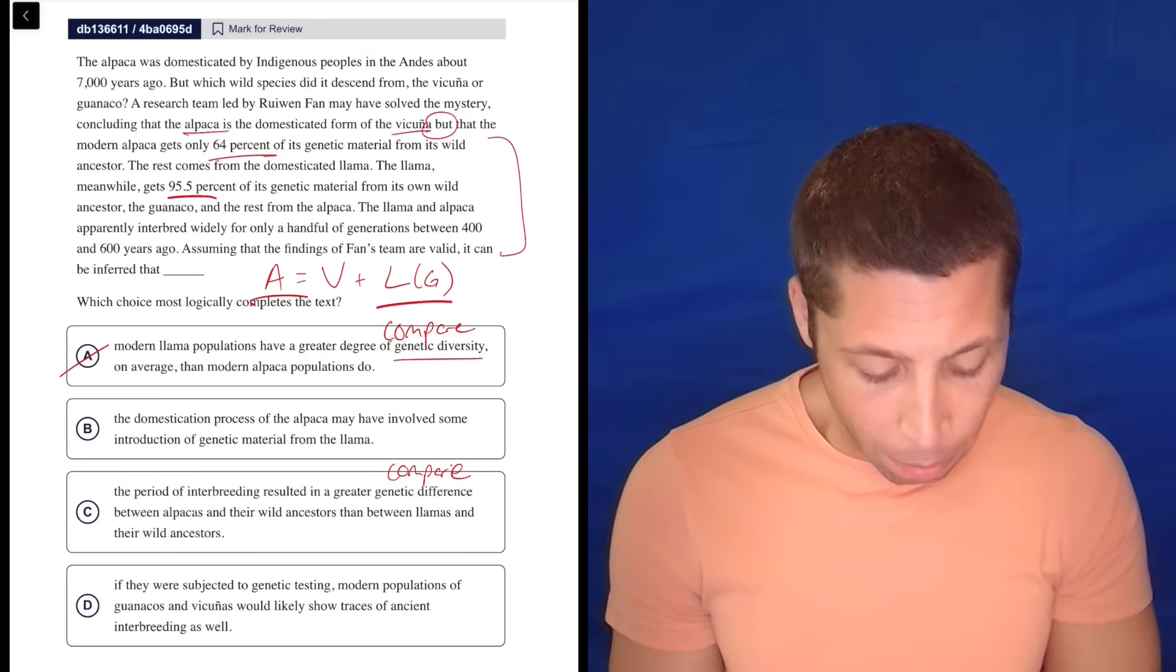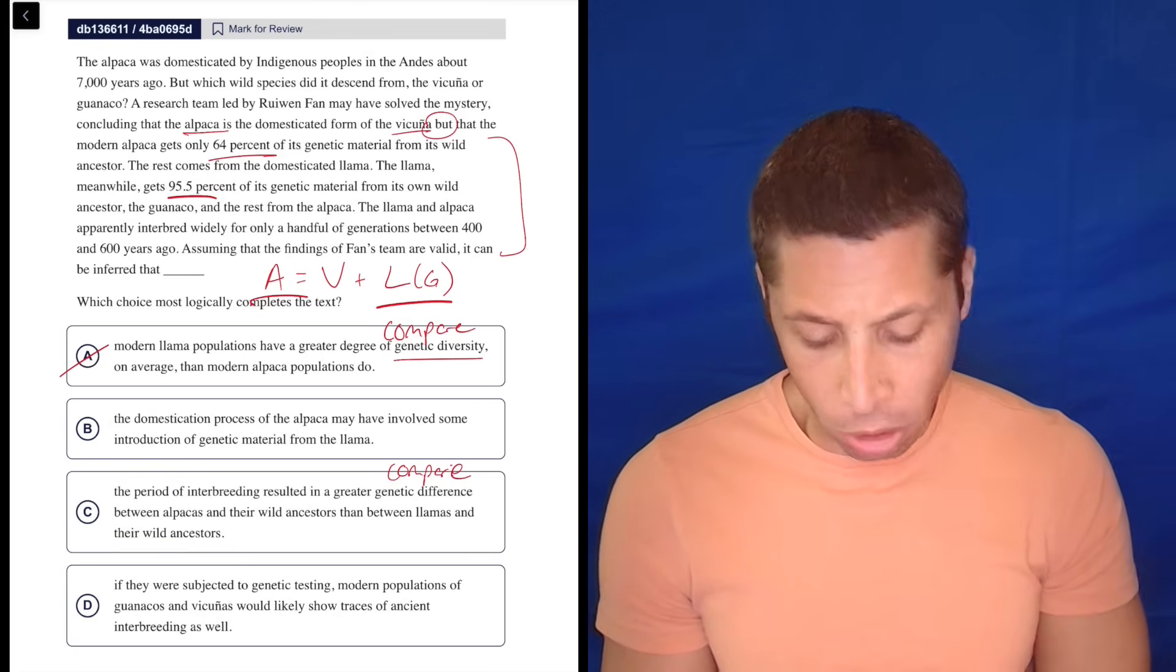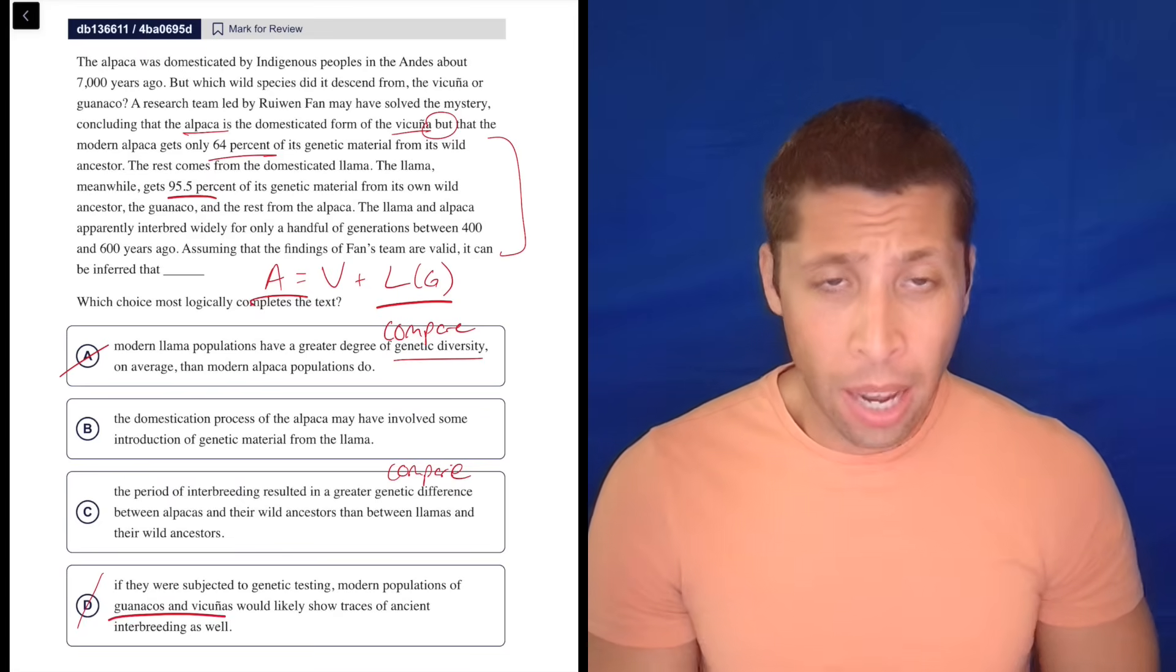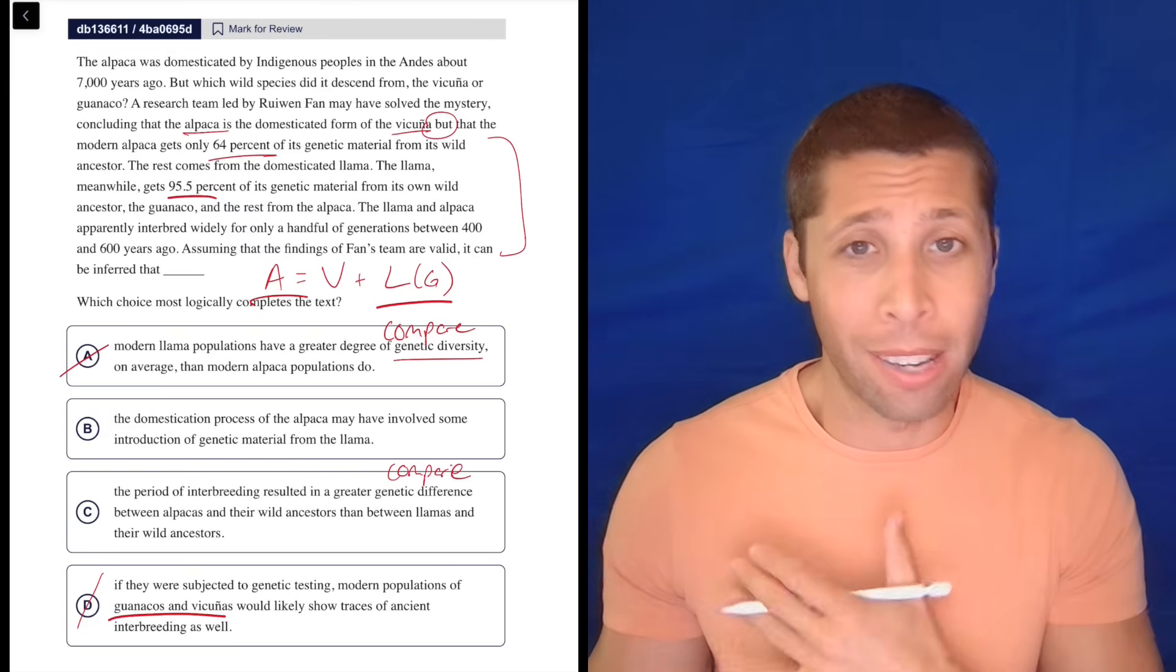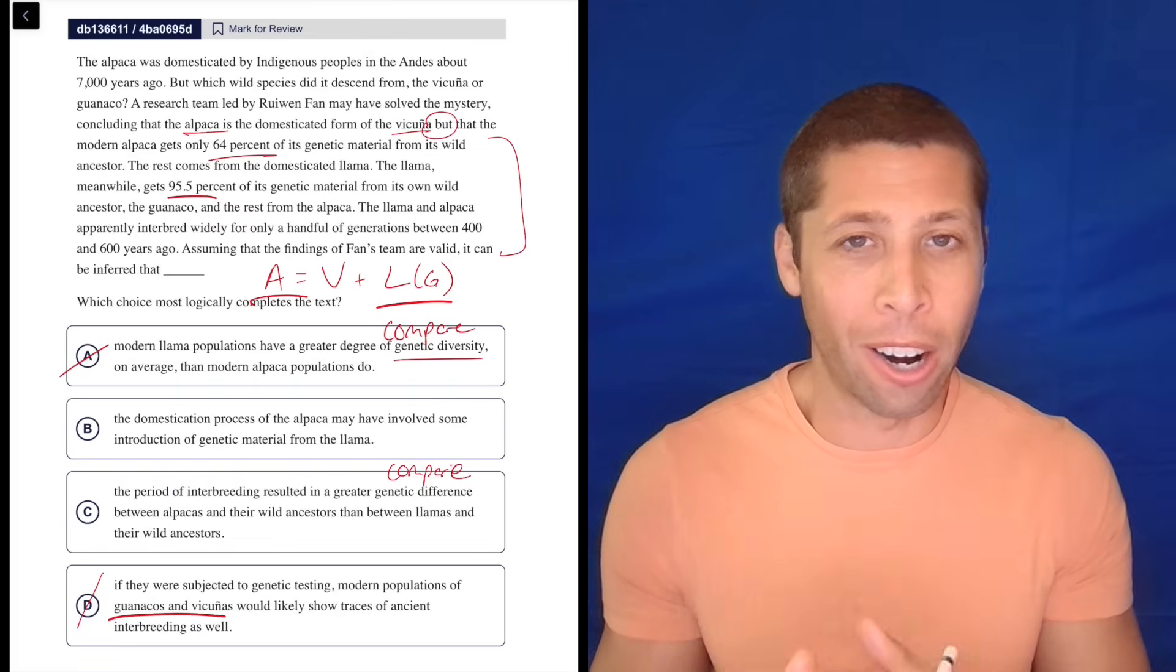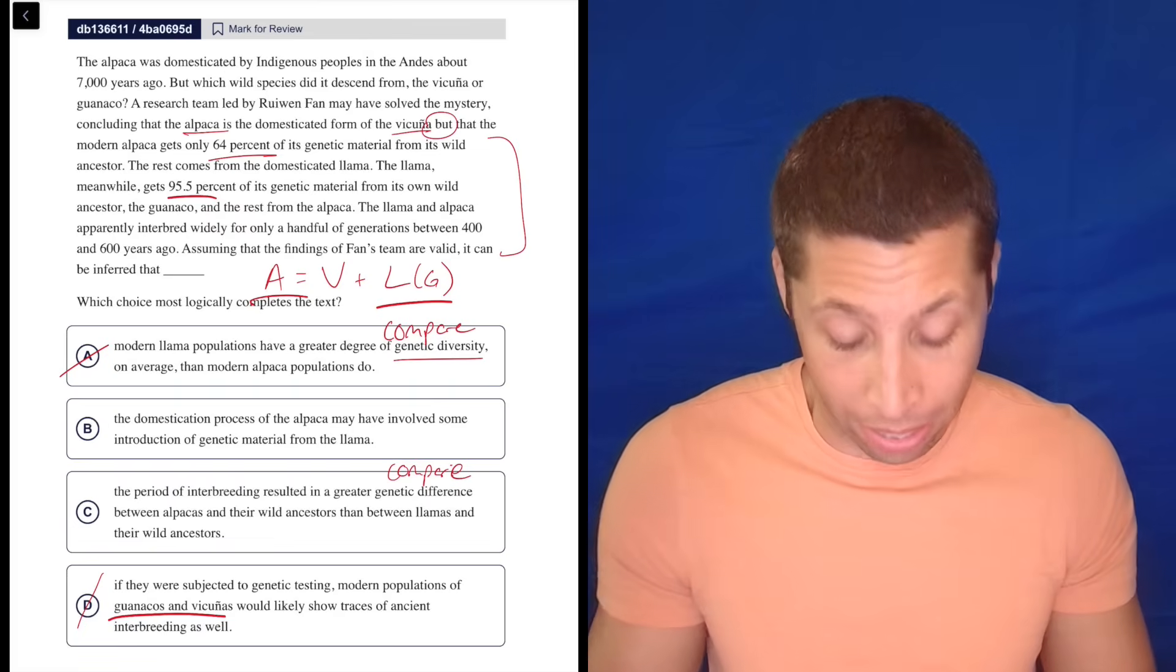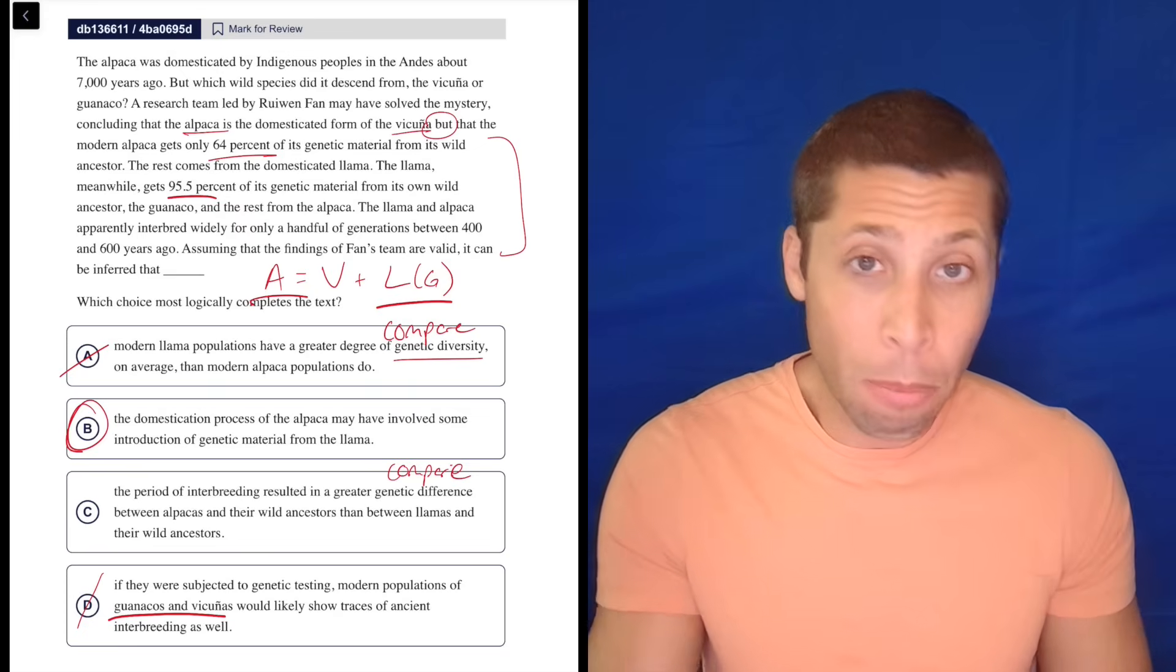D, if they were subjected to genetic testing, modern populations of huenacos and vicuñas would likely show traces of ancient interbreeding as well. I don't care about them. This is mostly a main character issue. It's about alpacas, maybe llamas, but the other guys are just like there for the ride. They're not really important to the main story. They are, I don't care about their history. The whole thing is about the alpaca. So this is where I'd probably pick B and move on.